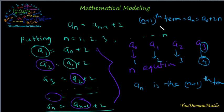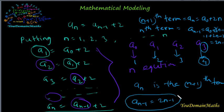In this formula, the nth term aₙ₋₁ = a₀ + 2(n-1). So putting the value of a₀, that means 1, this becomes 2n - 2, and this term is 2n - 1. So aₙ₋₁ = 2n - 1. This is the solution of the recurrence relation or the difference equation.